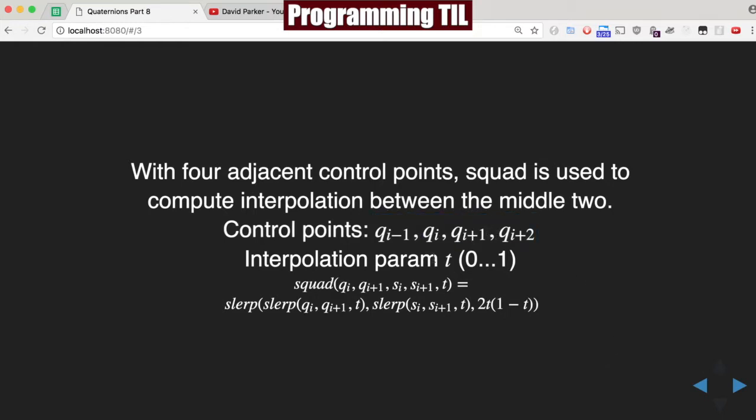So if the parameter is between 0 and 1, squad formula is equal to multiple slerps formula from the previous episode, but for QI and QI plus 1, and then also SI, SI plus 1, and then the slerp of those values, and then taking the 2T times 1 minus T. So it's kind of a lot to get into.